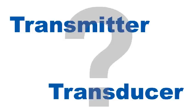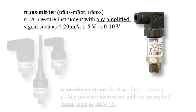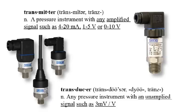There is no clearly defined answer to this question. Some companies define a transmitter as a pressure instrument with any amplified signal, such as 4 to 20 milliamps, 1 to 5 volts, or 0 to 10 volts, and a transducer as any pressure instrument with an unamplified signal, like 3 millivolts per volt.